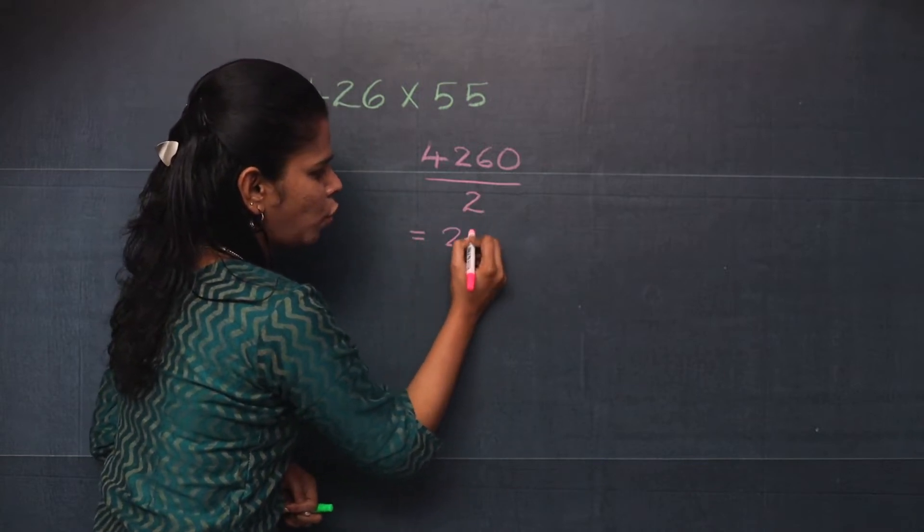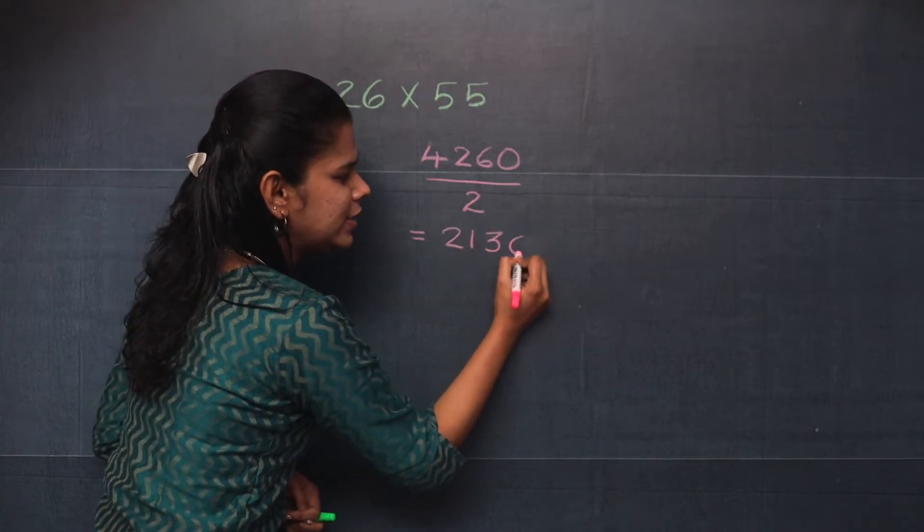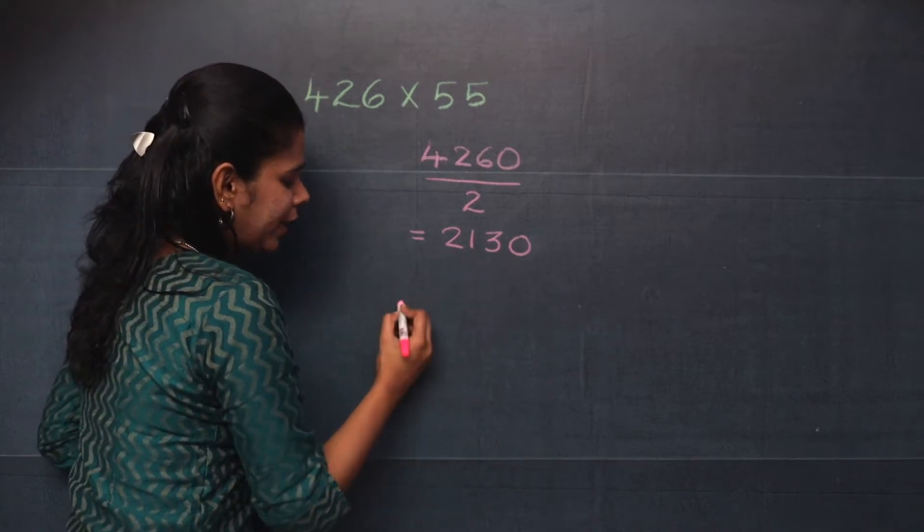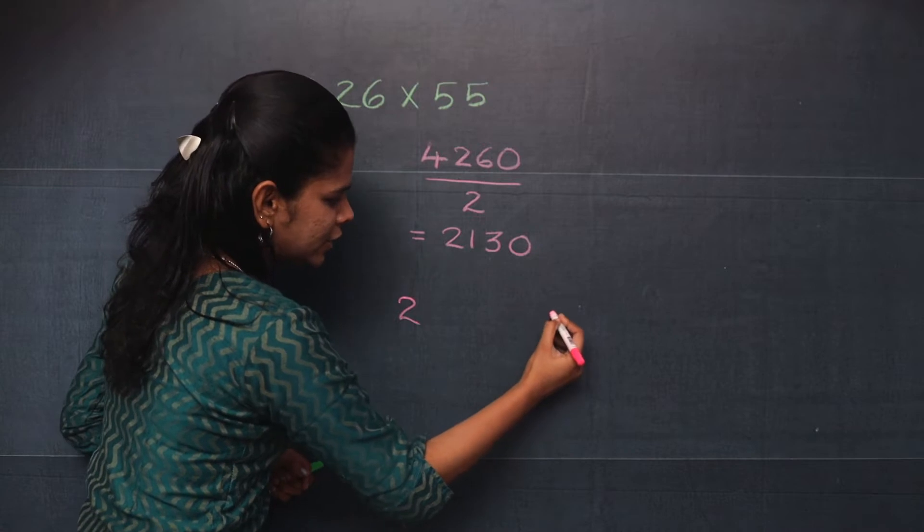So you will get 2, 1, 3, 0. Now the last step is you will write 2 here and then 0 here.